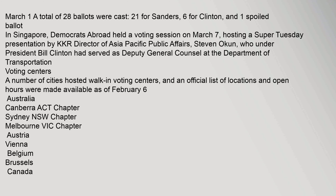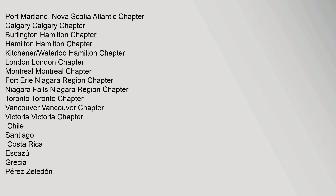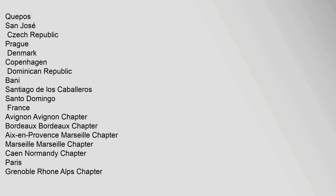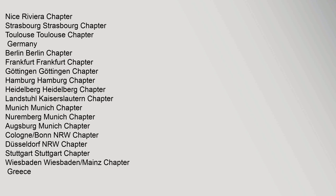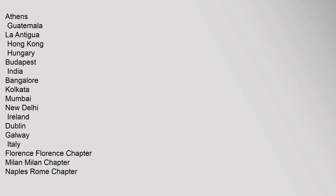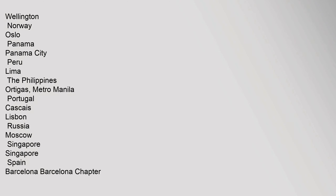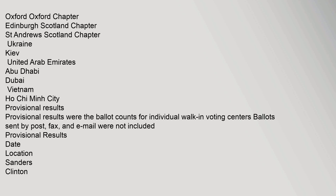Voting centers: A number of cities hosted walk-in voting centers, and an official list of locations and open hours was made available as of February 6th. Locations included: Port Maitland, Nova Scotia; Calgary; Burlington/Hamilton; Kitchener-Waterloo; London; Montreal; Fort Erie/Niagara Region; Niagara Falls; Toronto; Vancouver; Victoria; Quepos/San Jose; Nice Riviera; Strasbourg; Toulouse; Athens; Rome; Wellington; Madrid; Oxford; Edinburgh, Scotland; and Saint Andrews, Scotland.